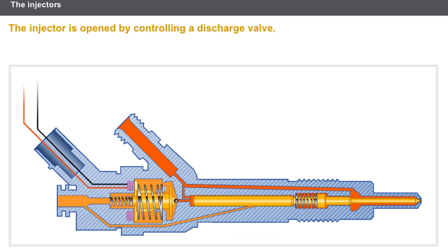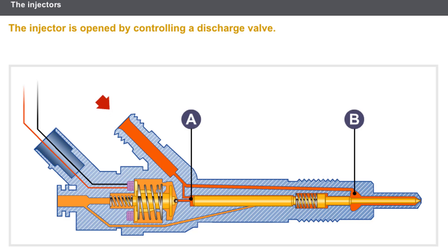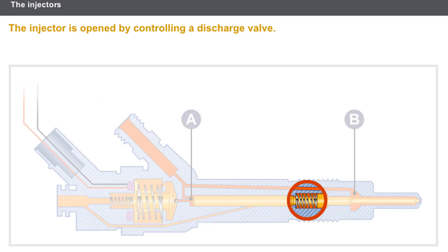Different types of injector exist; however, their operating principle remains the same. The injector is supplied with fuel under pressure. The fuel pressure at A and B is identical. The spring keeps the injector closed.